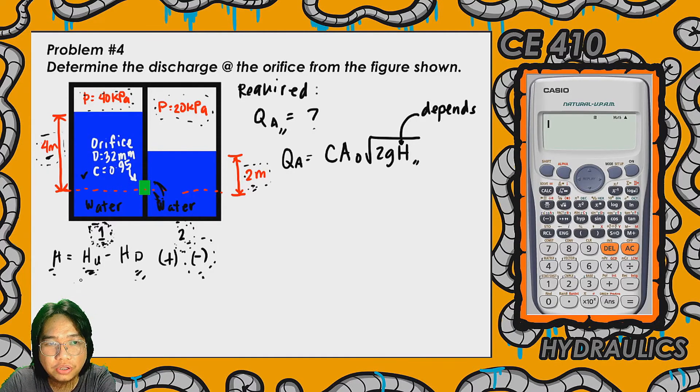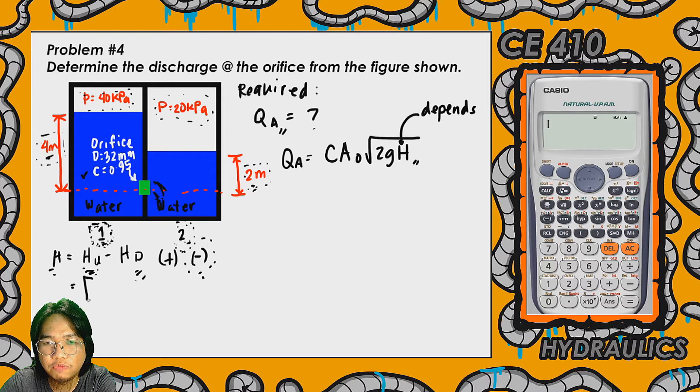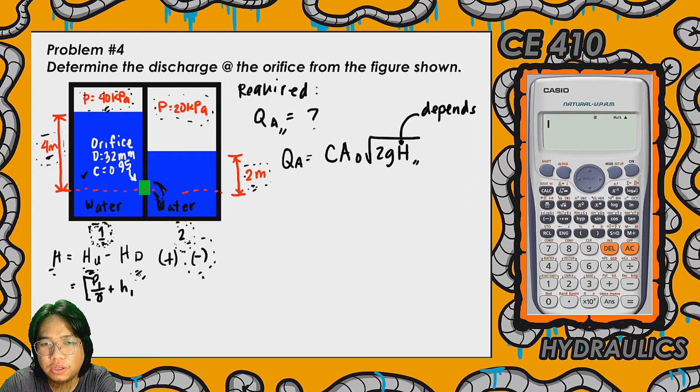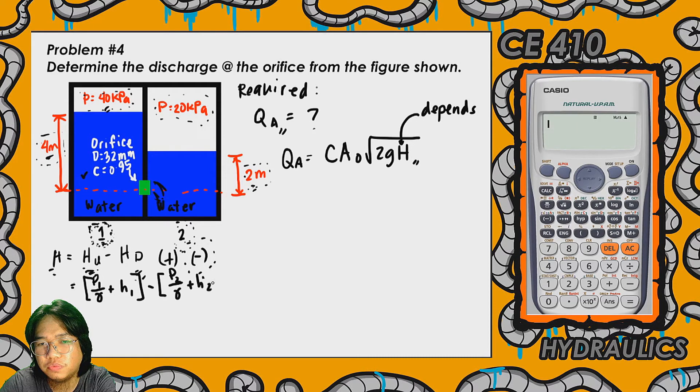Now let's compute for the value of uppercase H. That's the difference between the energy heads of the upstream reservoir and the downstream reservoir. For the upstream reservoir, the total energy head comprises of the input gauge pressure - that's the pressure head P1 over gamma plus the head of the water H1, minus for chamber number 2, that's P2 over gamma plus H2.